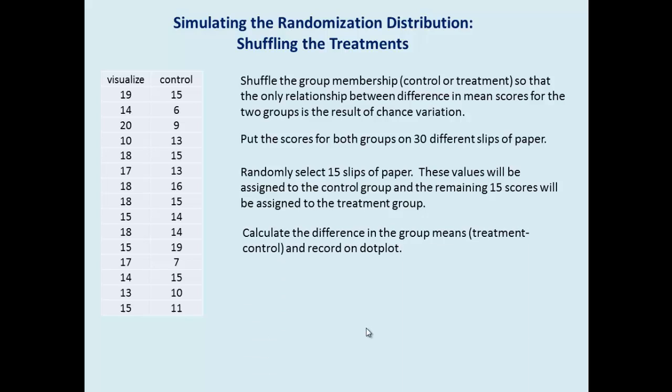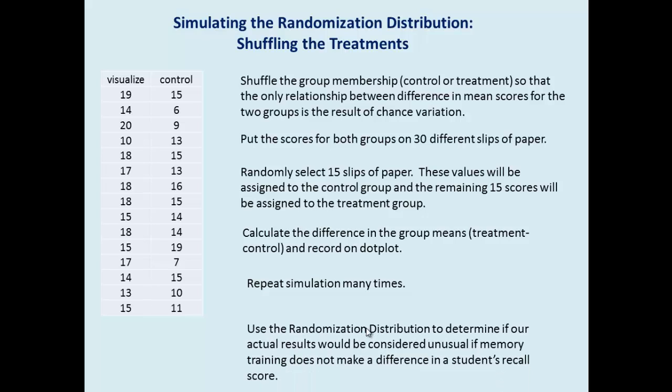We'll calculate the difference in the group means, treatment minus control, and record on a dot plot. We'll repeat this simulation many times. We'll use the randomization distribution to determine if our actual results would be considered unusual if memory training does not make a difference in a student's recall score.